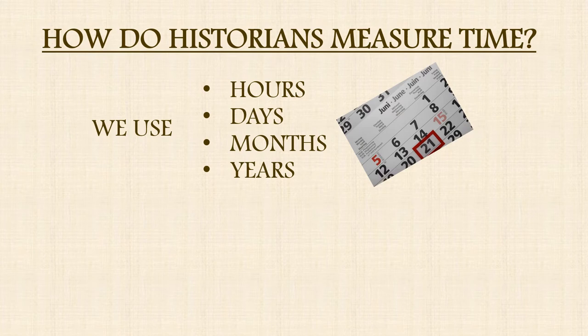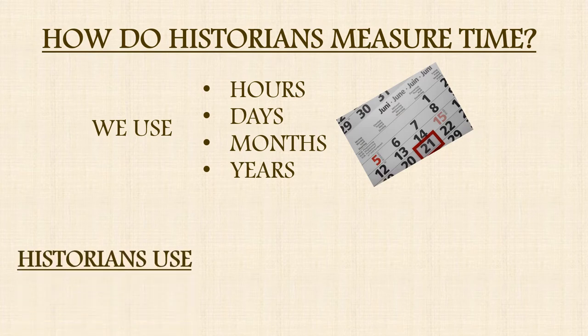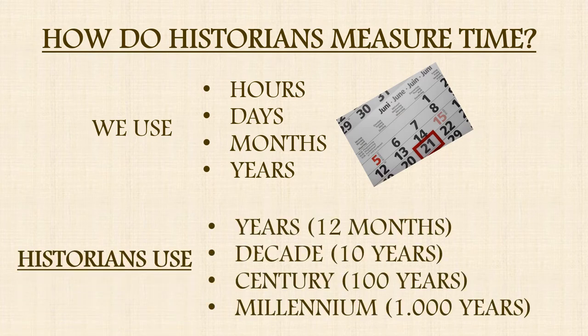How do historians measure time? As you know, we use days, months, and years. But historians use words such as: decade, equal to 10 years; century, equal to 100 years; and millennium, equal to 1,000 years.